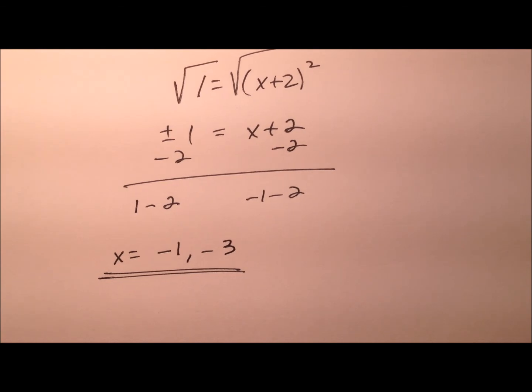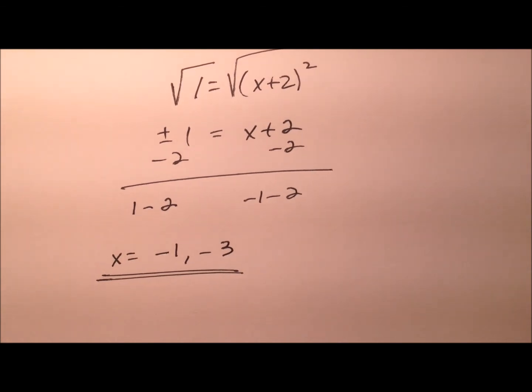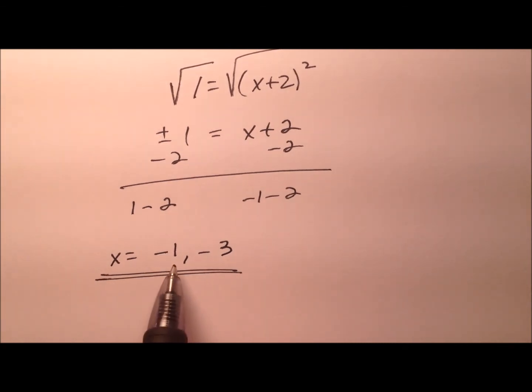So what this tells me is the tangent lines have this point of intersection or this point of tangency and the x coordinates for those points are negative 1 and negative 3. So let's go back to what we're trying to do. We're trying to write the equations of these tangent lines. So to write tangent line equations, we need a point and a slope.